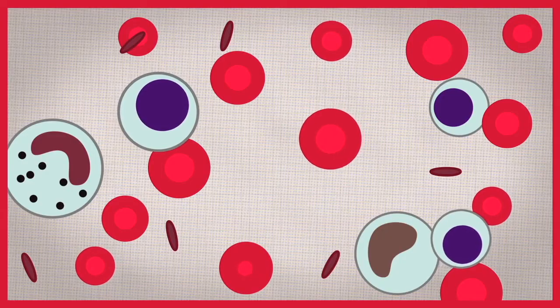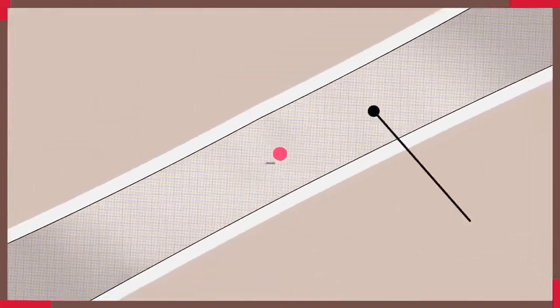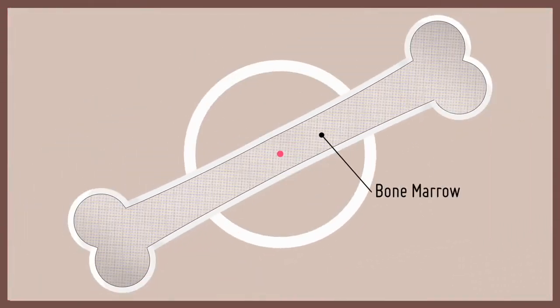New blood cells are produced by hematopoietic stem cells. These rare cells are found in the hollow part of bones called the marrow.